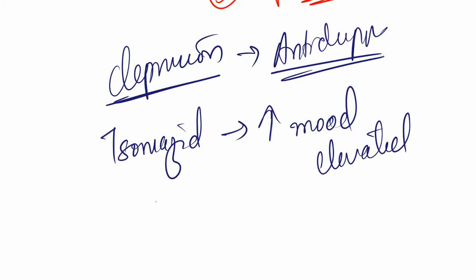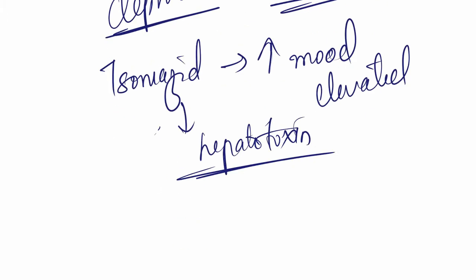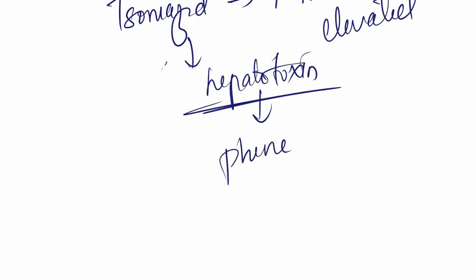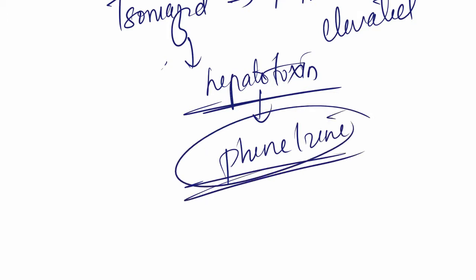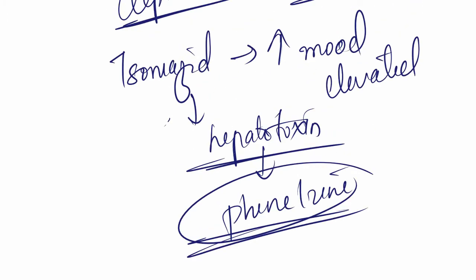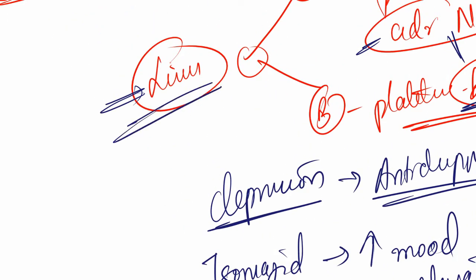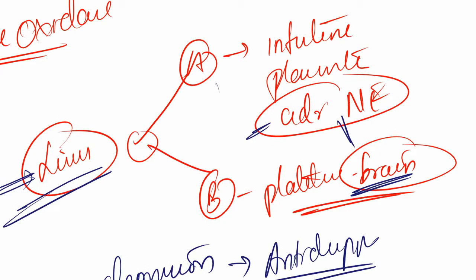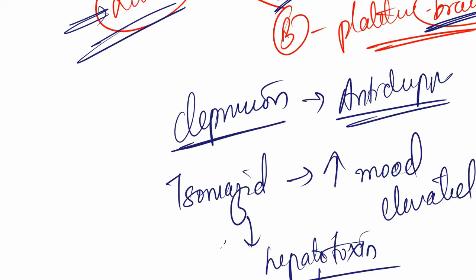The only problem with isoniazid is it's hepatotoxic. Given that psychiatric illnesses need chronic treatment, we can't have something that's very toxic. So we developed a safer drug called phenelzine. Why did I mark out liver? If there is any damage to the liver, these things are not going to be properly functioning. We don't want that occurring there.